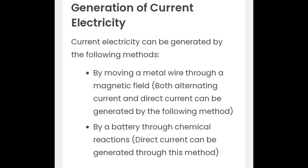Generation of current electricity. Current electricity can be generated by the following methods: by moving a metal wire through a magnetic field — both alternating current and direct current can be generated by this method — and by a battery, through chemical reactions, direct current can be generated.